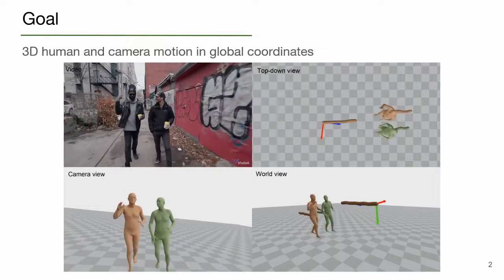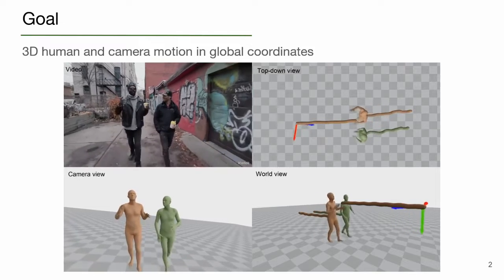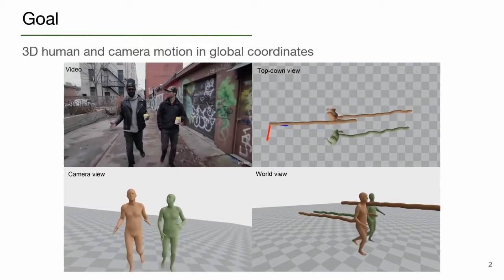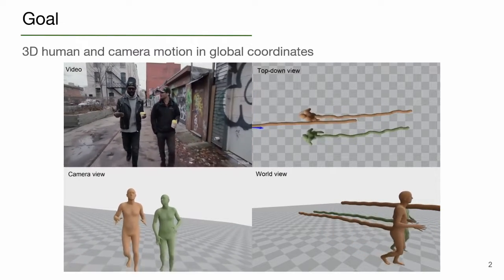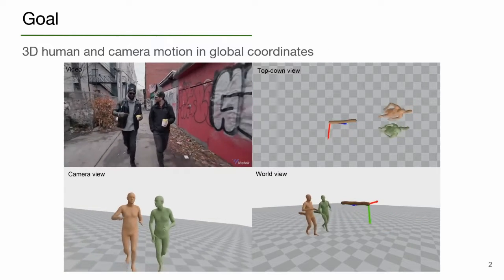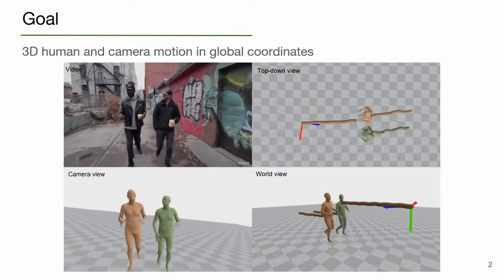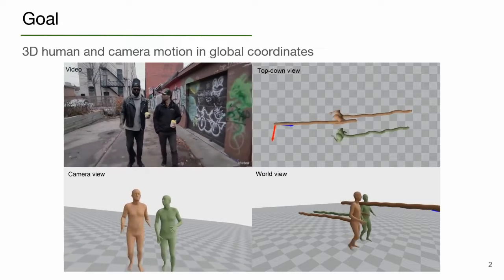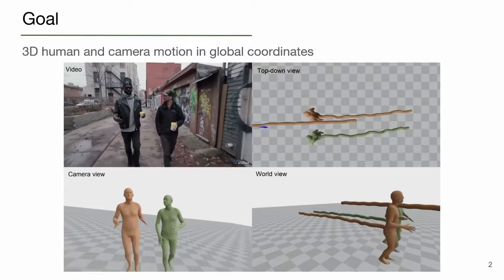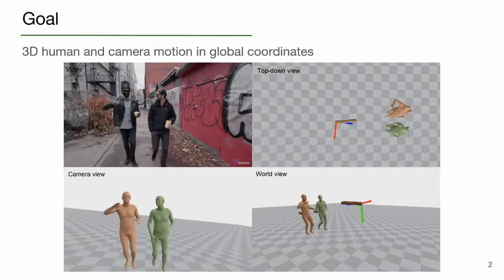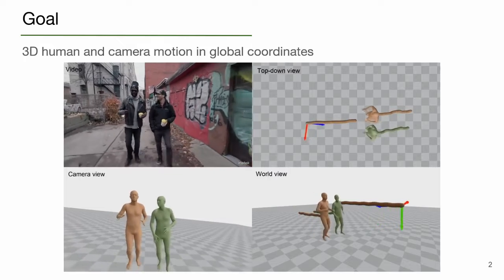Our goal in this paper is to estimate 3D human and camera motion in global coordinates. However, this is a highly challenging task due to the coupling of human and camera motions in videos captured with dynamic cameras. Our paper tackles this challenging problem by jointly reasoning about both human and camera motion.